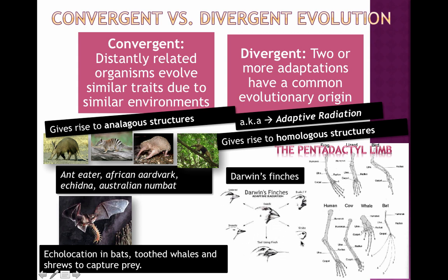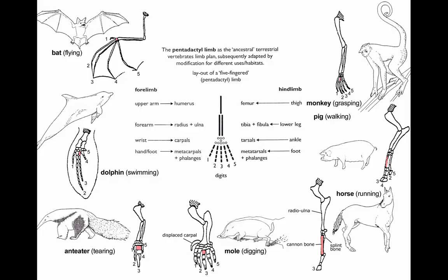Darwin's finches are another example: the different beak sizes adapted for different food sources as the environment changed. Here's a larger diagram showing divergent evolution and homologous structures using the pentadactyl limb. It's really amazing to see that all these animals share a very similar limb structure — even the bat, with what looks like five long fingers — all just different adaptations of the same basic design, which shows our common evolutionary ancestry.